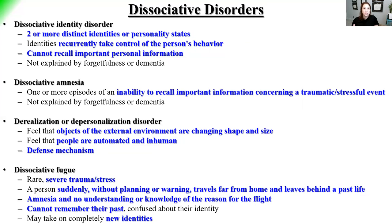Derealization/depersonalization disorder: objects in the external environment seem to change size and shape, the world feels unreal, people feel automated or inhuman. If depersonalizing, patients feel that way about themselves. Dissociative fugue is very rare — without warning or planning, the patient travels far from home, leaving behind their past life and unable to remember anything about it. They may take on a completely new identity; for example, someone forced into an unwanted marriage may flee to another country with no memory of their past.